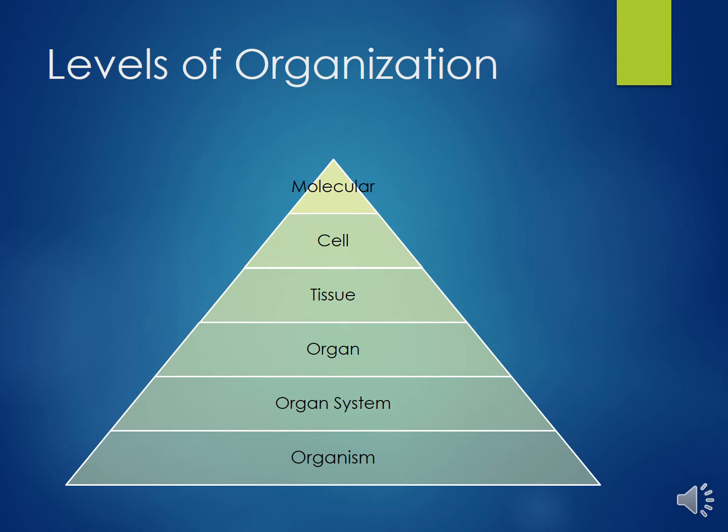The molecular level contains atoms and molecules. Atoms are bonded together to form molecules. The cellular level contains cells and their organelles, or specialized structures within. The cell is known as the smallest functional unit of an organism.